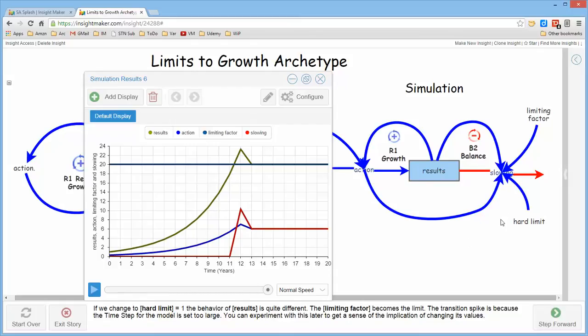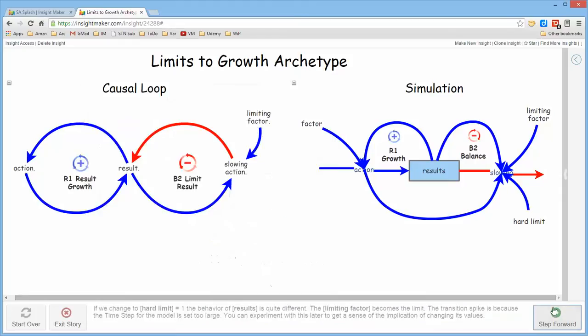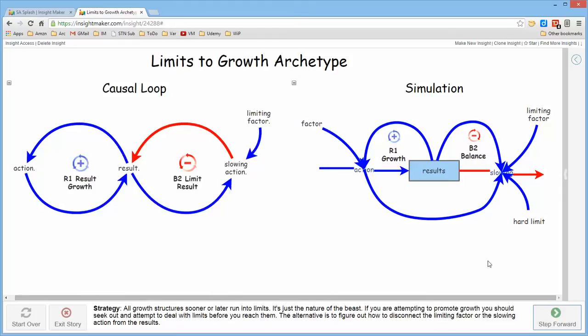So these are two ways that I perceive that the slowing action could come into play in this structure. And it's typically, if you think about it, any growing structure sooner or later has to run into a limit someplace because the growth requires resources. So it's simply, you might say, it's destiny for a reinforcing structure to run into limits.